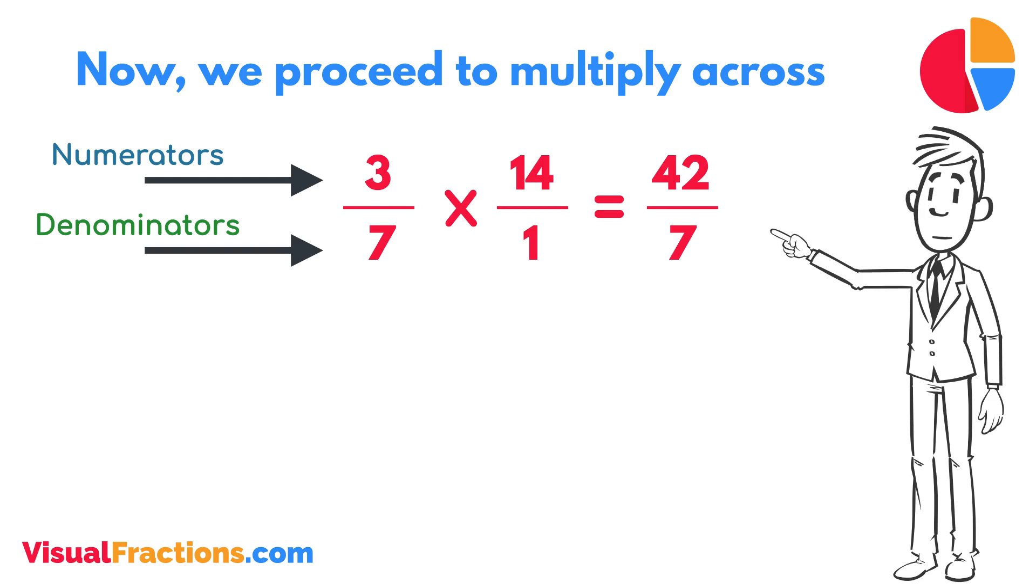To find the final answer, divide the numerator by the denominator. So, 42 divided by 7 equals 6.